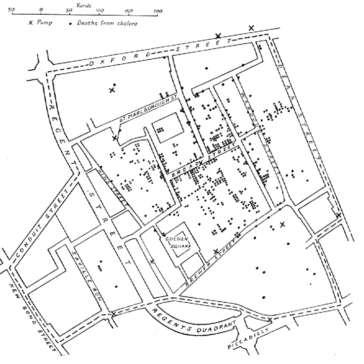Traditionally geospatial computing has been performed primarily on personal computers or servers. Due to the increasing capabilities of mobile devices, geospatial computing in mobile devices is a fast-growing trend. The portable nature of these devices, as well as the presence of useful sensors such as Global Navigation Satellite System receivers and barometric pressure sensors, make them useful for capturing and processing geospatial information in the field. In addition to the local processing of geospatial information on mobile devices, another growing trend is cloud-based geospatial computing.